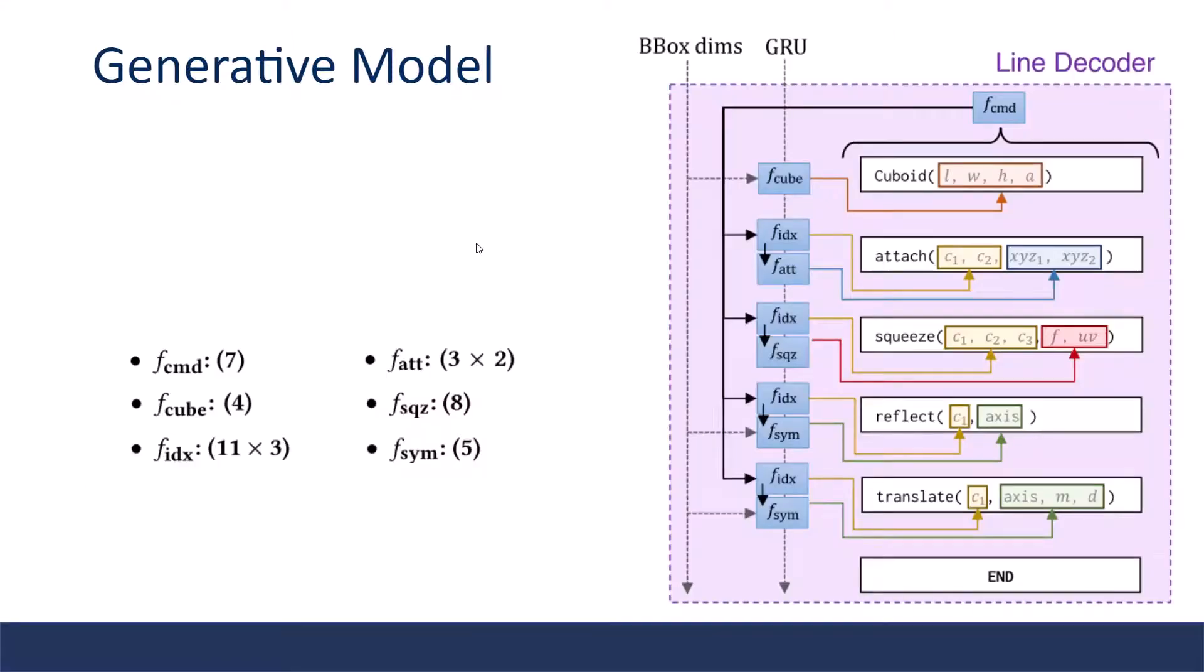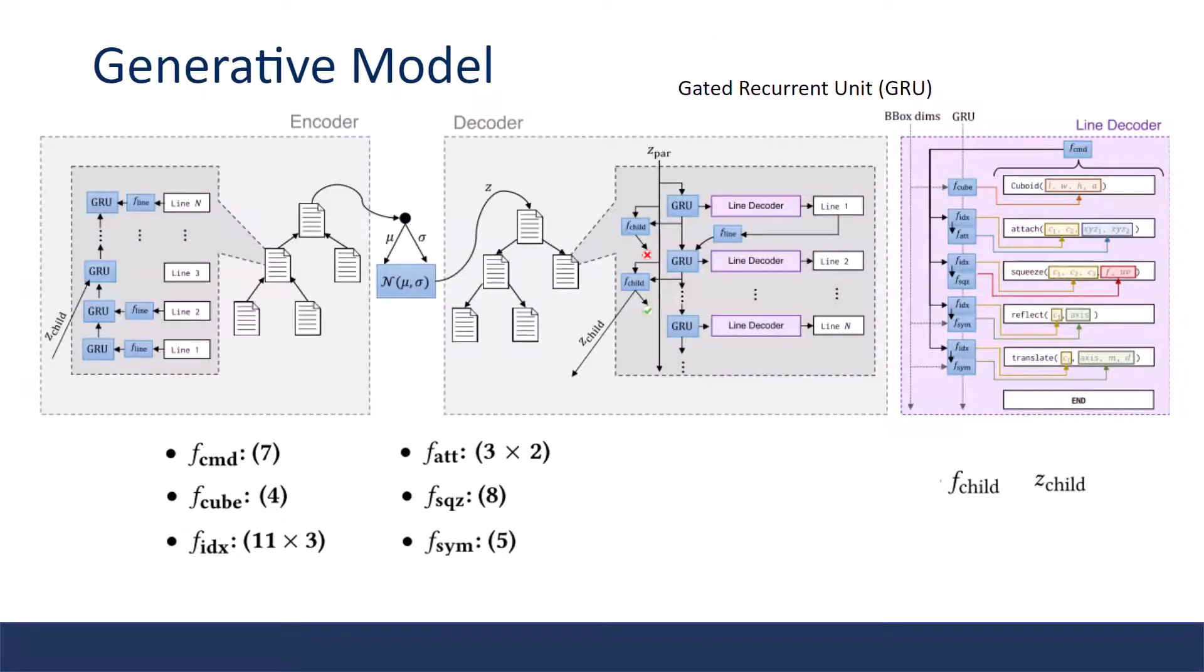The line decoder uses the hidden state of the GRU cell along with conditioning information by the size of the current bounding volume to predict a 63-dimensional vector representing a single line in Shape Assembly. The vector is a combination of these features and numbers of size. Due to the time limitation, I will not go to the details of these features. The line decoder and the F_child use multilayer perceptrons, the MLP, to predict.